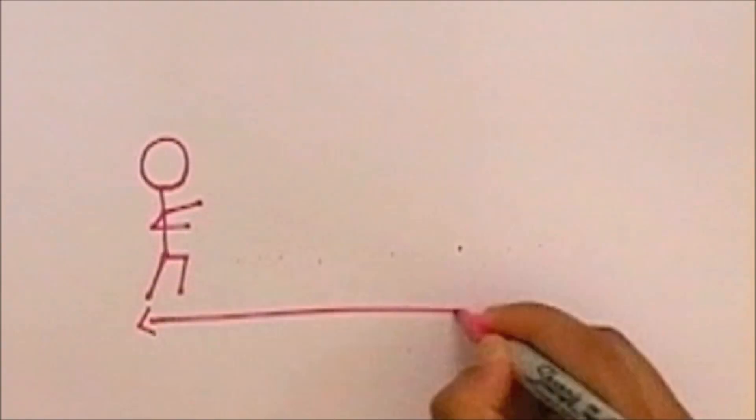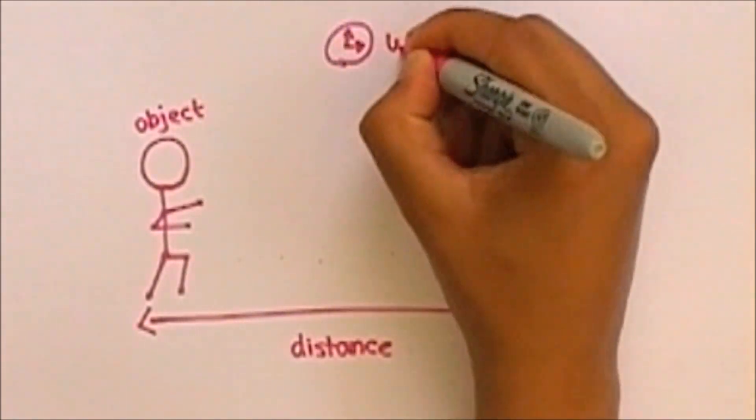Speed is the distance an object travels per unit time, for example per second or per minute.